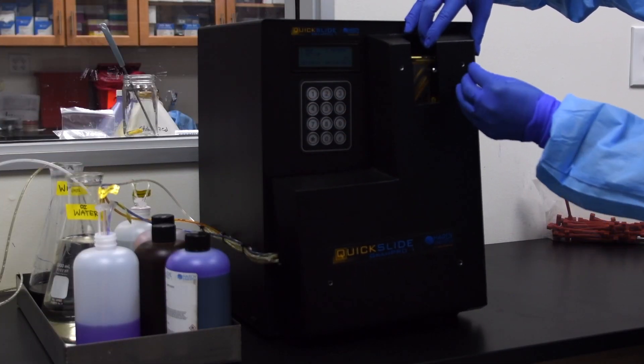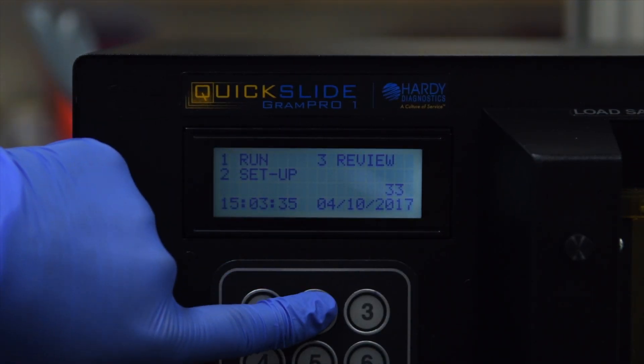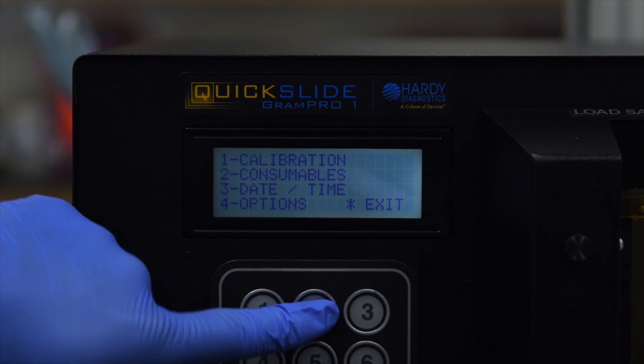Now replace the front panel. From the main menu, press 2 on the keypad to select Setup. Press 2 to select Consumables.